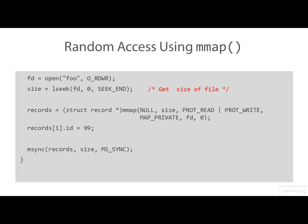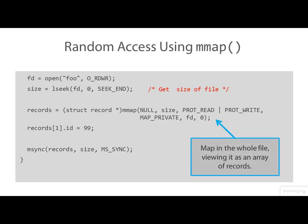Here we are seeking to the end of the file and recording the offset simply to get its size. Then, in a key part of this code, we're mapping the whole file into memory. The cast on the pointer returned from mmap means that records is pointing to an array of record structures — so we are viewing this mapped file as an array of record structures. That makes it very easy to update a record: here we're indexing into that array to get element number one and updating its ID value to 99. Finally, we sync the mapping back out to the file.